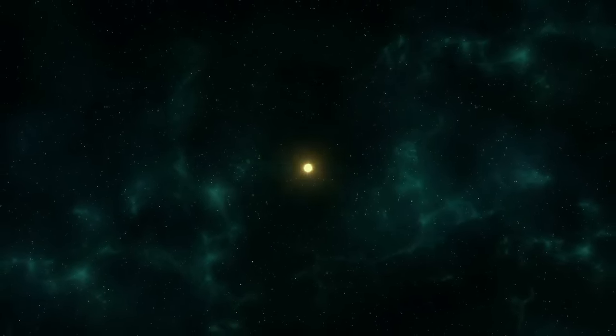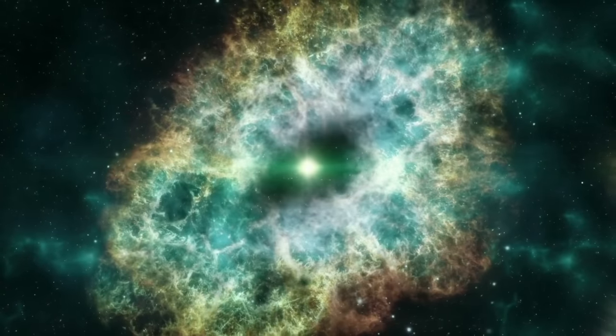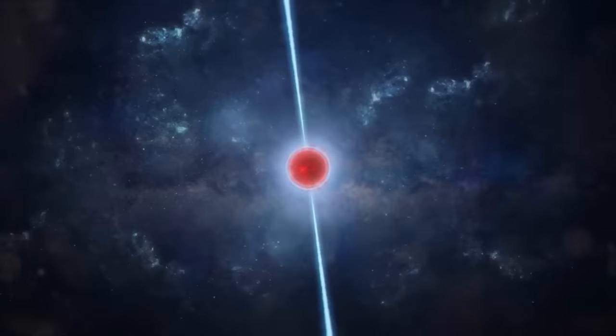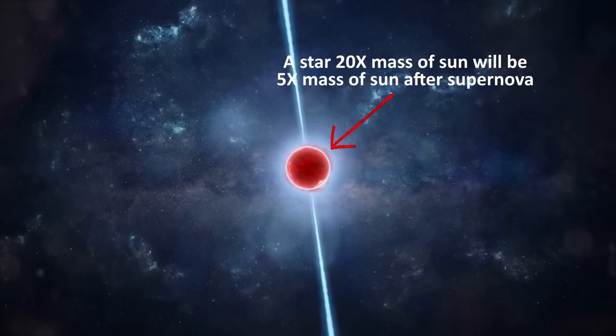So if the star prior to the explosion was 20 times the mass of the Sun, after losing 75%, its core will be about 5 times the mass of the Sun.